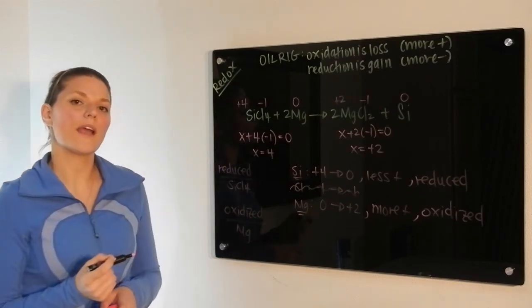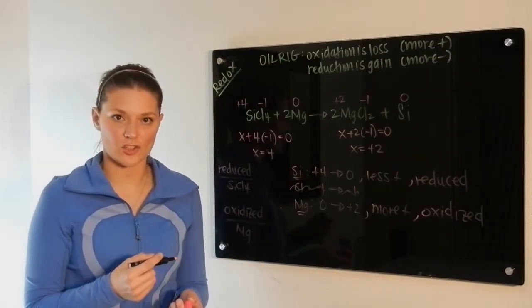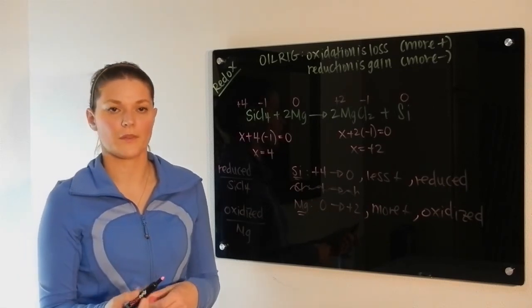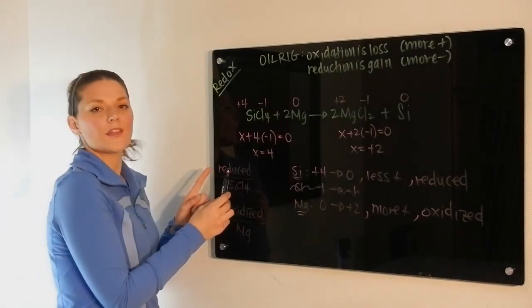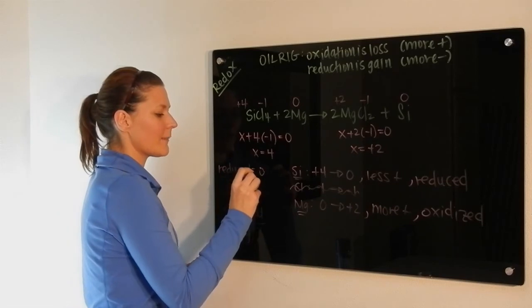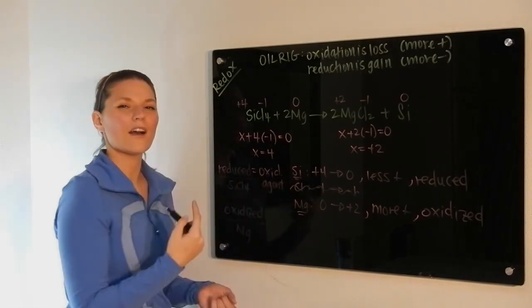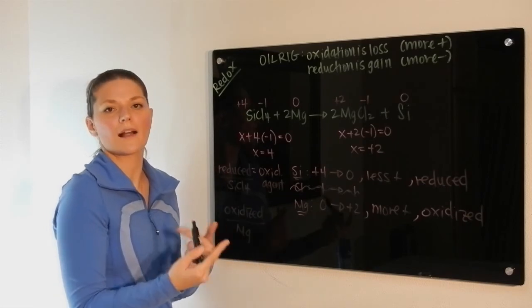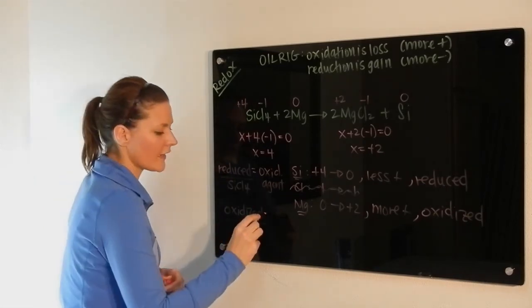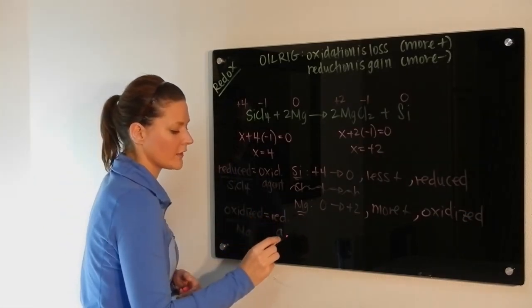The last idea we have is that of the reducing agent and the oxidizing agent. So this here, the thing that is reduced, that is the same as the oxidizing agent. So they have this reverse relationship, exactly the opposite. This is oxidized, so it would be the reducing agent.